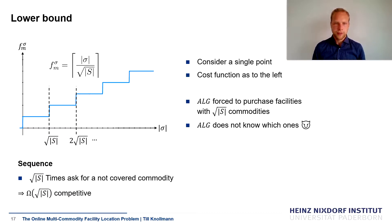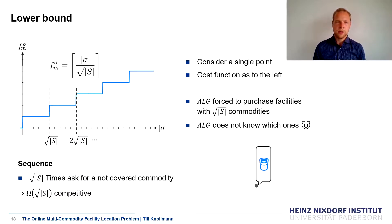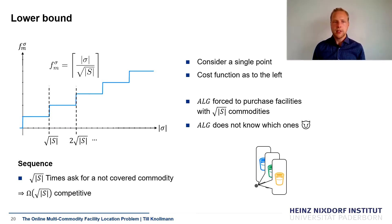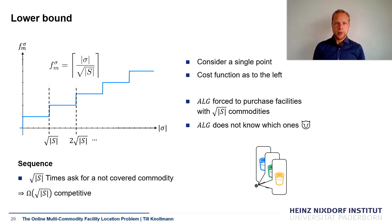Now let's look at the adversarial sequence. We compare against a deterministic online algorithm. We simply ask sqrt(s) many times for a not-yet-covered commodity. The algorithm builds a facility serving sqrt(s) commodities each time. After sqrt(s) rounds, the algorithm has covered everything using sqrt(s) facilities. An optimal solution could have simply placed a single facility picking exactly the commodities that are going to be requested. So we are Omega(sqrt(s)) competitive here.